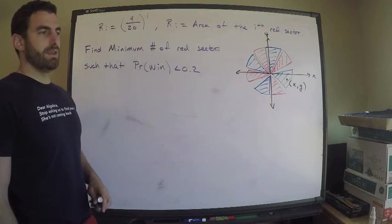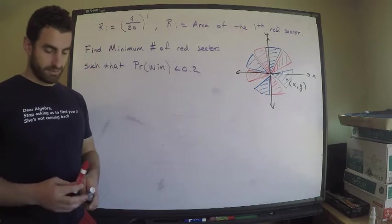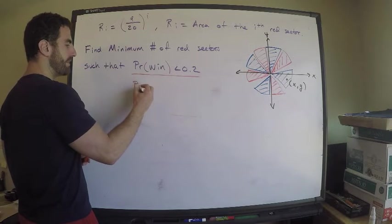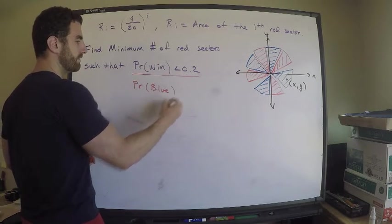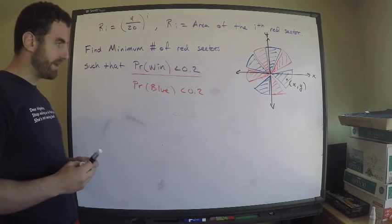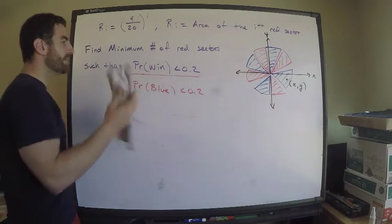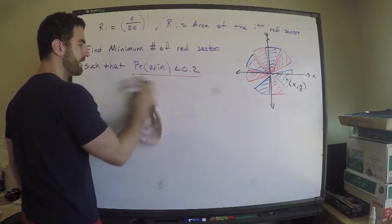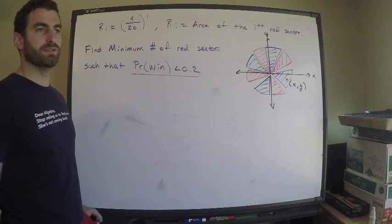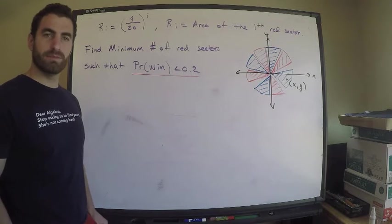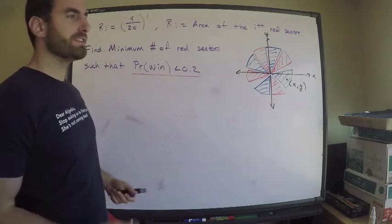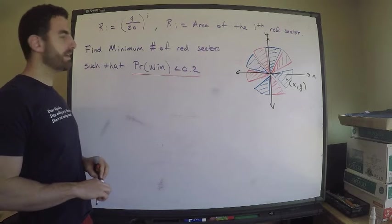I don't know anything about blue sectors, but this quantity is saying that the probability that I get blue (because winning corresponds to blue) is less than 0.2. But I want to say something about red. Using the complement: if I don't get red, I get blue. If I win I get blue; if I lose I get red.